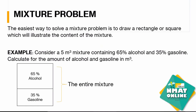Next, we have the mixture problem. The easiest way to solve a mixture problem is to represent it in a way that makes it easier to recognize the different compositions of your mixture. You can use a rectangular or square form to better illustrate it. For example, if you have a 5 cubic meter mixture containing 65% alcohol and 35% gasoline, calculate the amount of alcohol and gasoline in cubic meters.